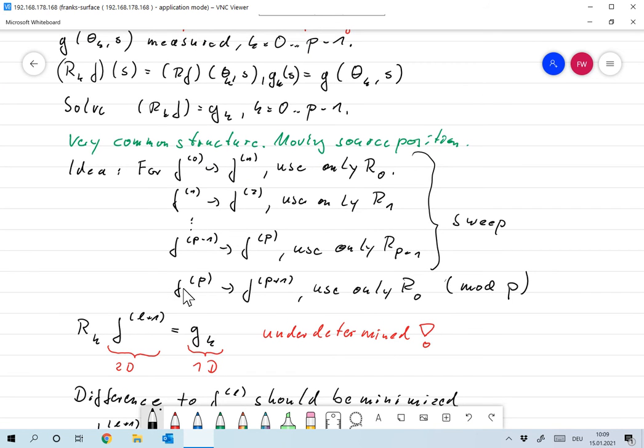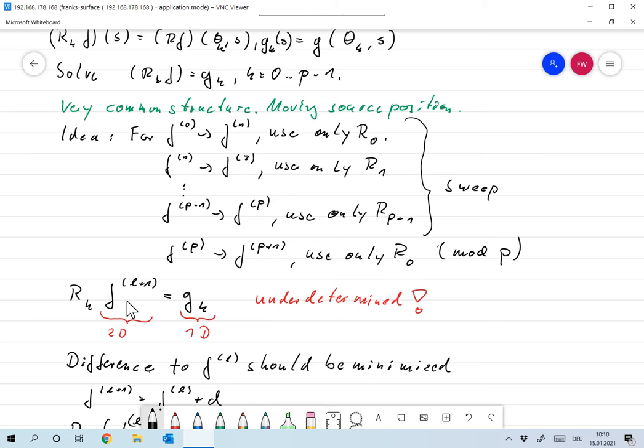After that we start again with the first data set. So to get from f_p to f_p+1 we start again with the data sets and the operators from the beginning, so you could think of this index over here as just taking f_p modulo p. So the index over here modulo p. So in each single iteration step, for example to get from f_l to f_l+1, we first choose one operator and one data set and we look for an f_l+1 that satisfies R_k f_l+1 is g_k. We could do that. The problem with this is that this is a 2D quantity and this is a 1D quantity, so this will be vastly underdetermined. This is a vastly underdetermined system.